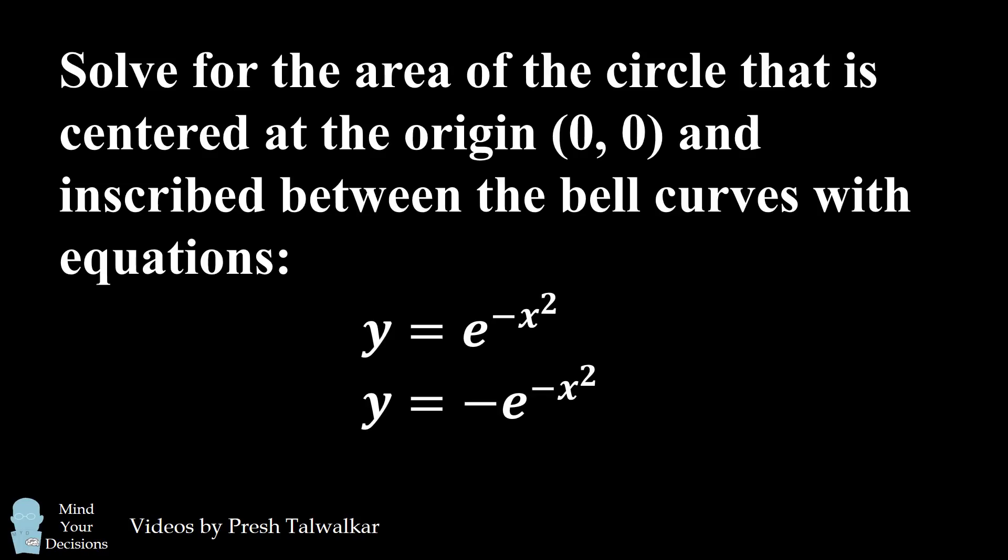Hey, this is Presh Talwalkar. Solve for the area of the circle that is centered at the origin and inscribed between the bell curves with equations y equals e to the power of negative x squared and y equals negative e to the power of negative x squared. Can you figure it out? Give this problem a try and when you're ready keep watching the video for the solution.